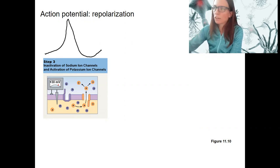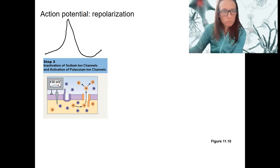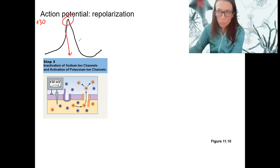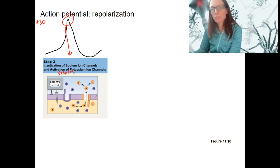Step three right here is plus 30 right here. At that point, we have inactivation of the sodium channels, voltage gated sodium channels. You already know how that happens. And we also have activation or opening, same thing for the potassium channels. This is going to cause potassium channels to open, potassium flows out, and we have repolarization.